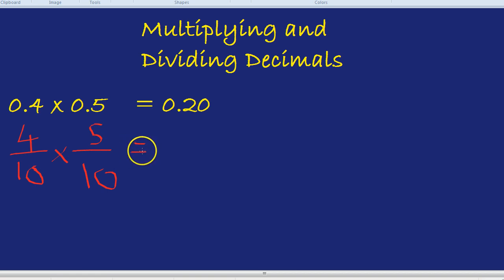4 over 10 times by 5 over 10. And using our multiplying fractions knowledge, you just times the top and times the bottom. So 4 times by 5 is 20. 10 times by 10 is 100. So we have 20 over 100 as our answer. And that can be a lot easier way of multiplying decimals.